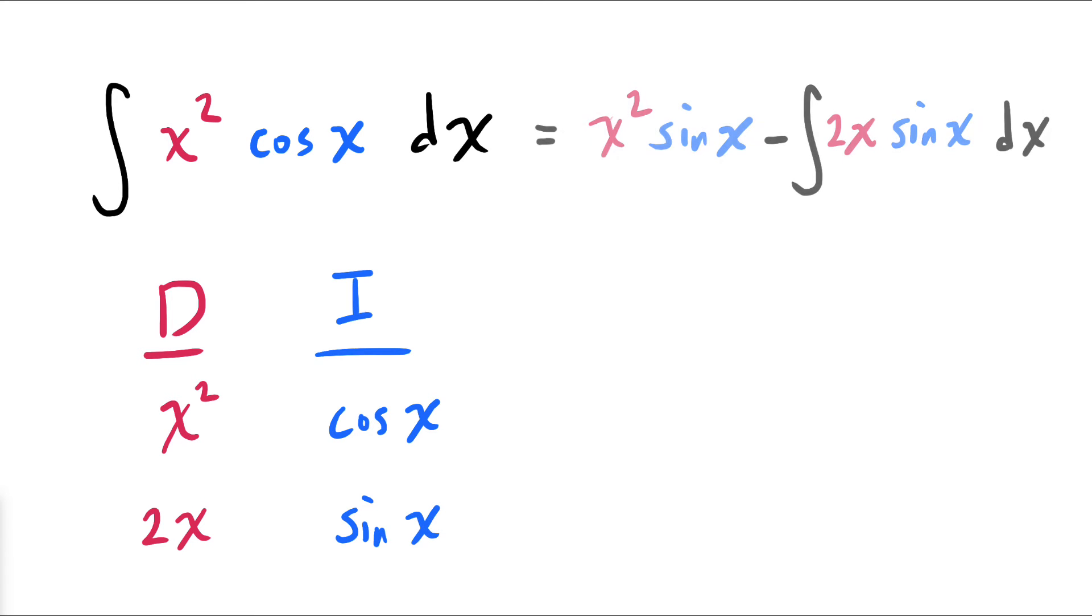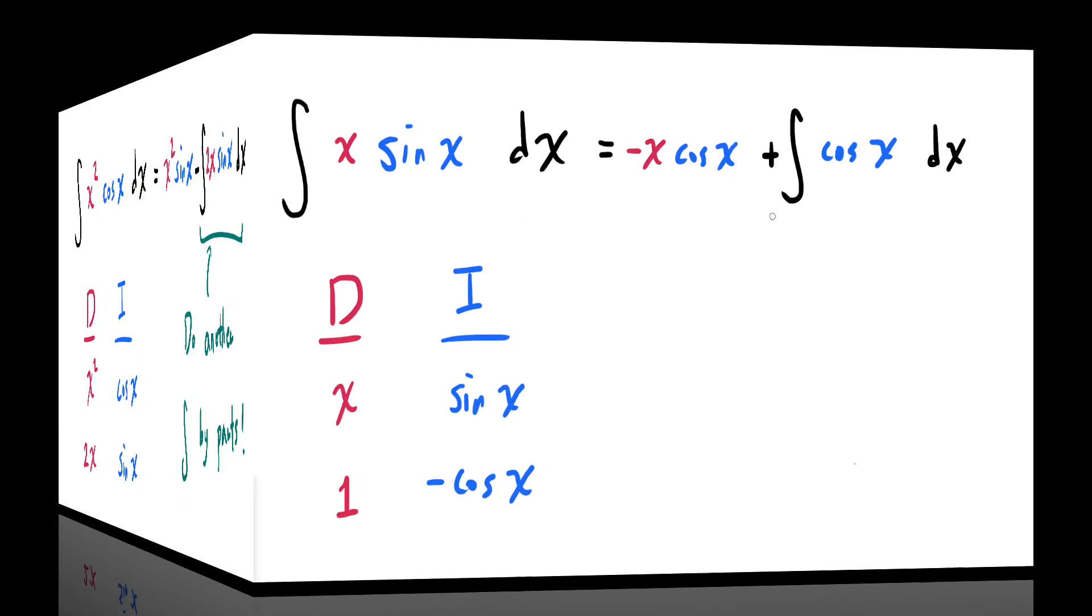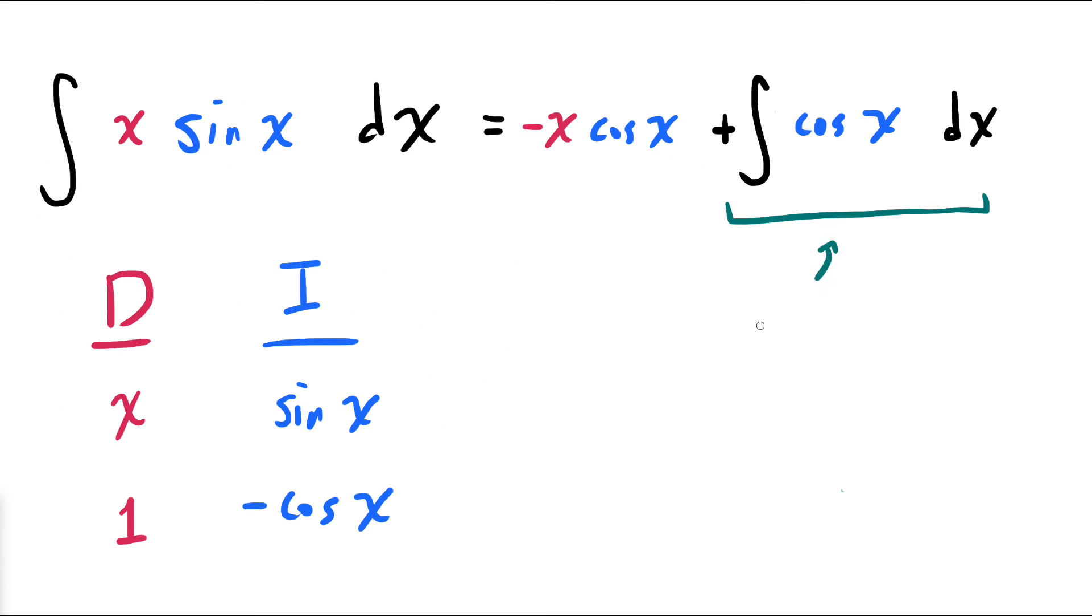In this case, integration by parts gets us this expression, and how do we evaluate this integral? Well, we know how to do this. We do another integration by parts. Because when we integrate by parts x times sine of x, then we now actually get an integral that we know how to evaluate.